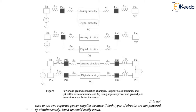To address this, we keep the resistance different for analog circuitry versus digital circuitry. The inductance of the bonding wire can also introduce noise, so the inductance, pad, and resistance for both analog and digital circuitry are kept separate. However, it is not wise to use completely separate power supplies, because if both types of circuits are not powered up simultaneously, latch-up could easily result. All these considerations should be addressed before any layout.